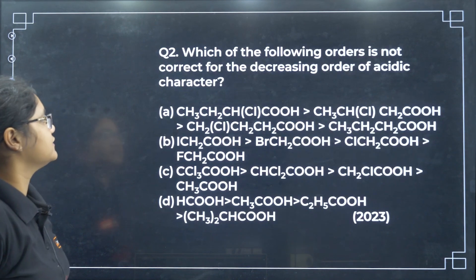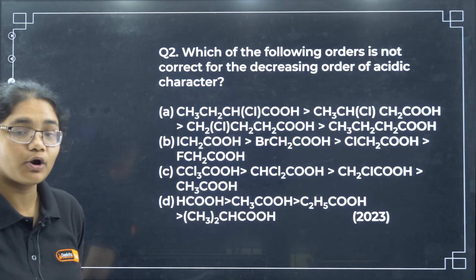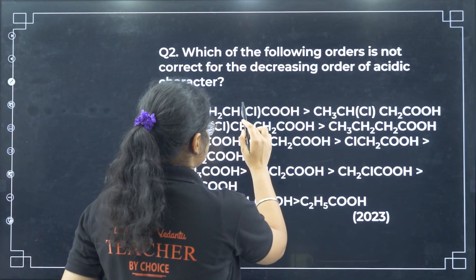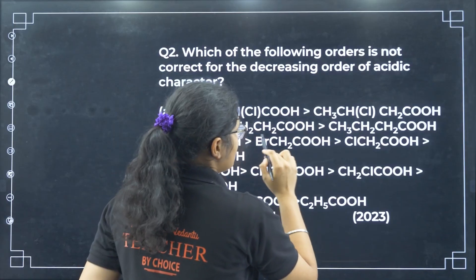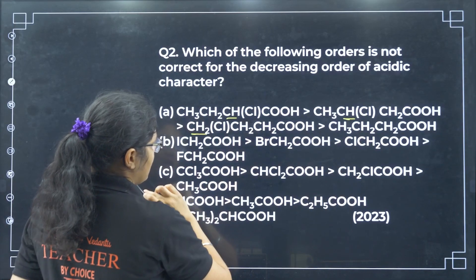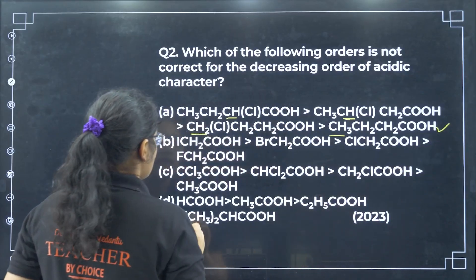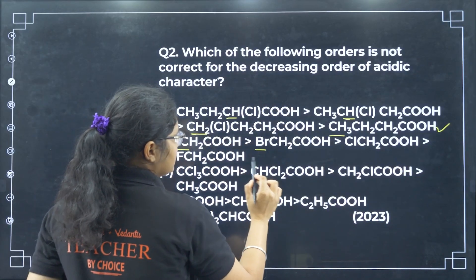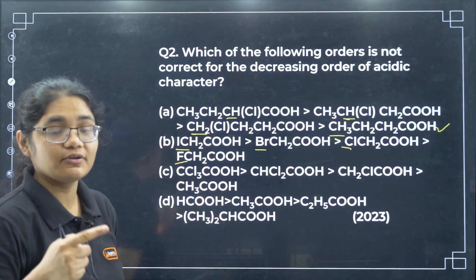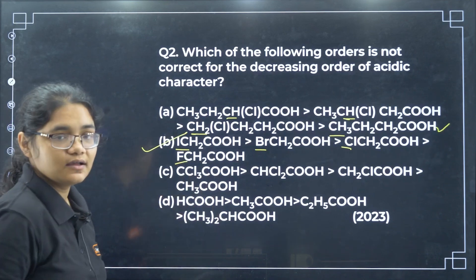Which of the following orders is not correct for the decreasing order of acidic character? We have CH3CH2CHCl, then Cl at farther positions. For the halogen order: iodine, bromine, chlorine, fluorine — this order should be reversed, because fluorine is more acidic due to its electron withdrawing nature. So option B is the correct answer.